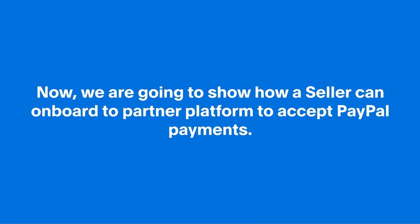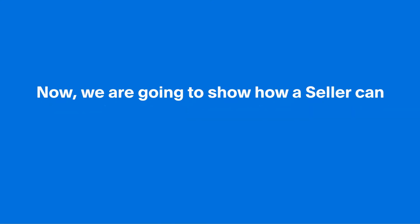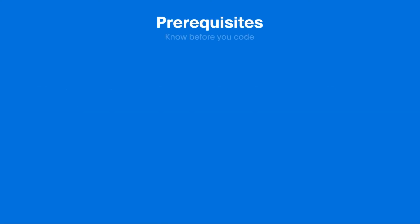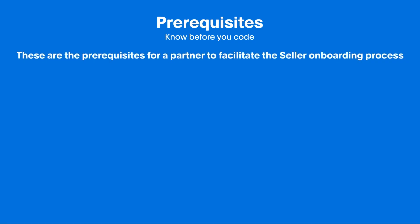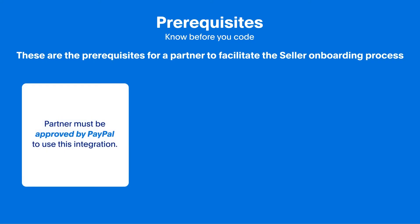Now we are going to show how a seller can onboard to a partner platform to accept PayPal payments. These are the prerequisites for a partner to facilitate the seller onboarding process. Partner must be approved by PayPal to use this integration — in order to get approved, partner should reach out to the PayPal business team.